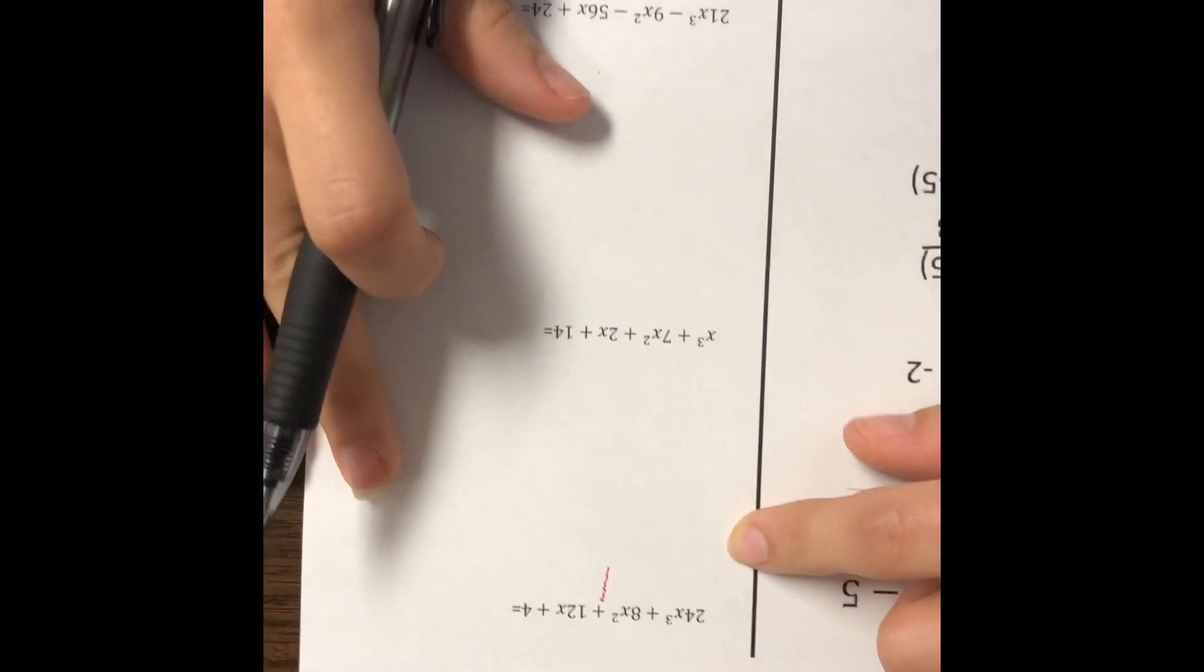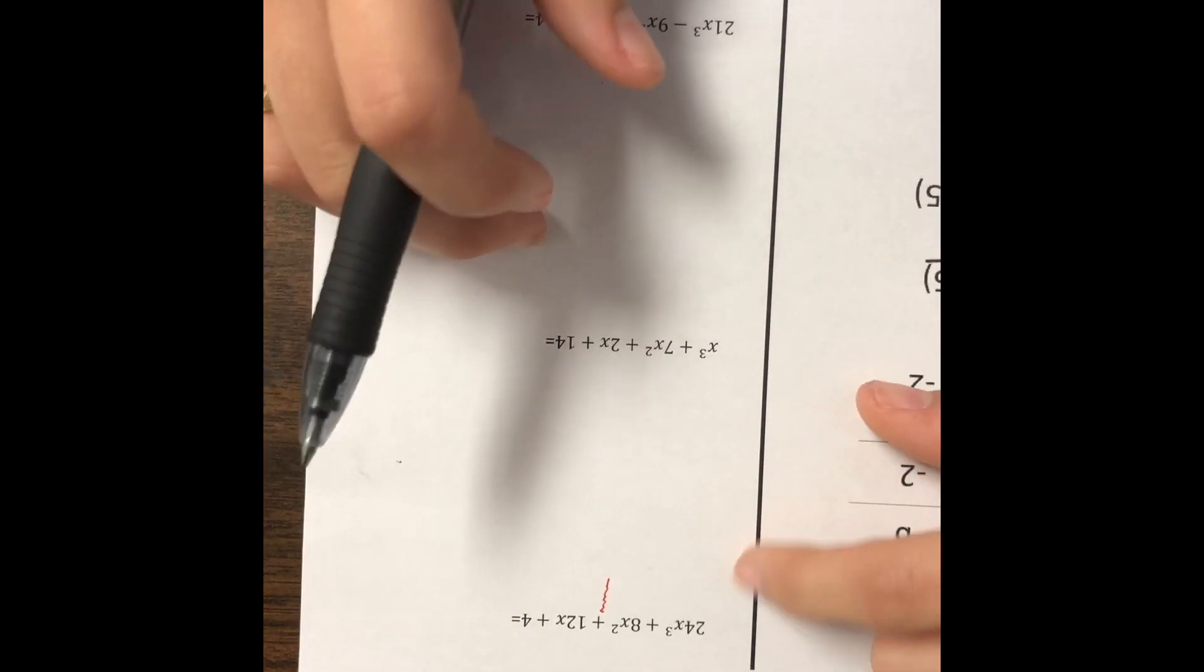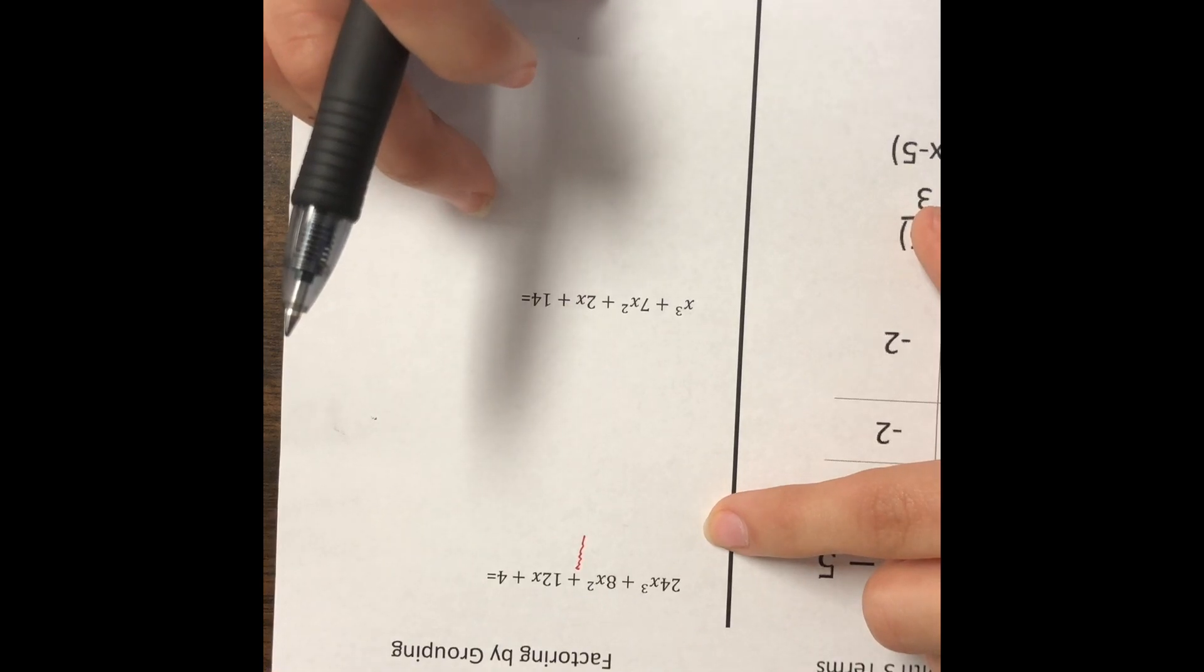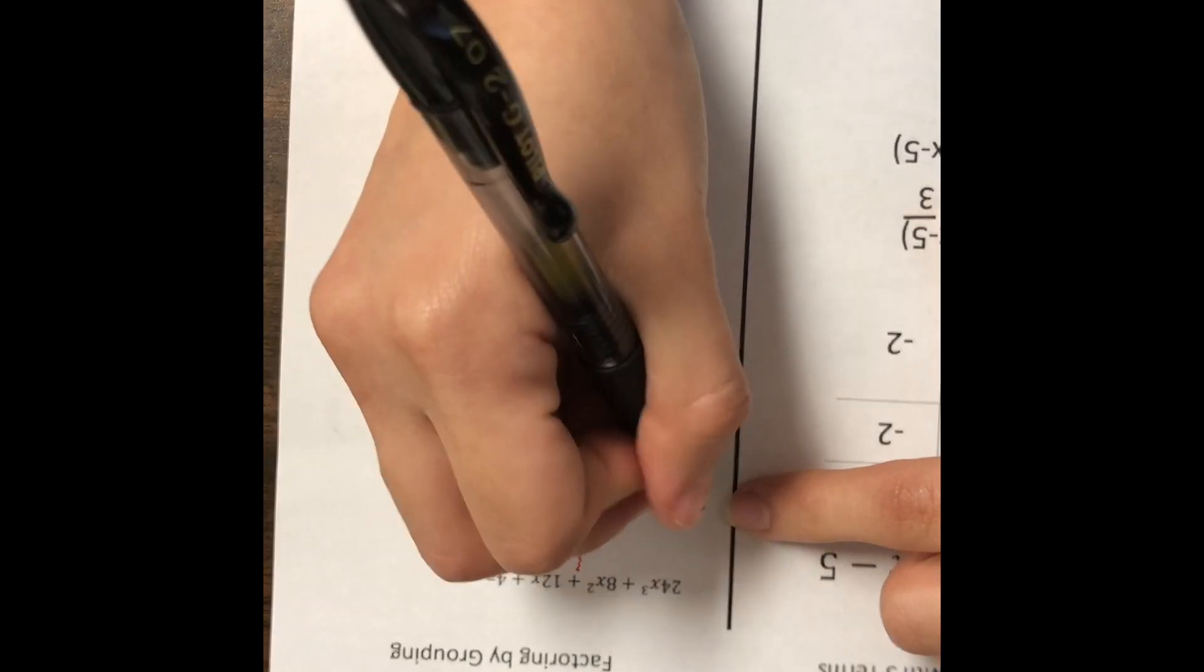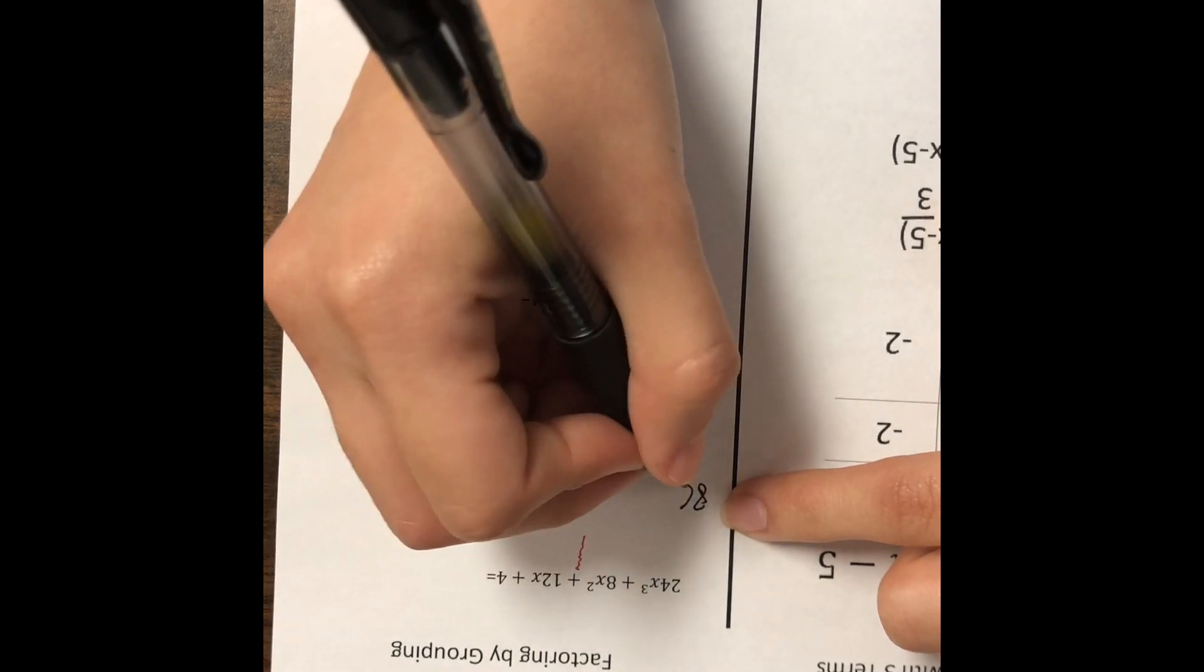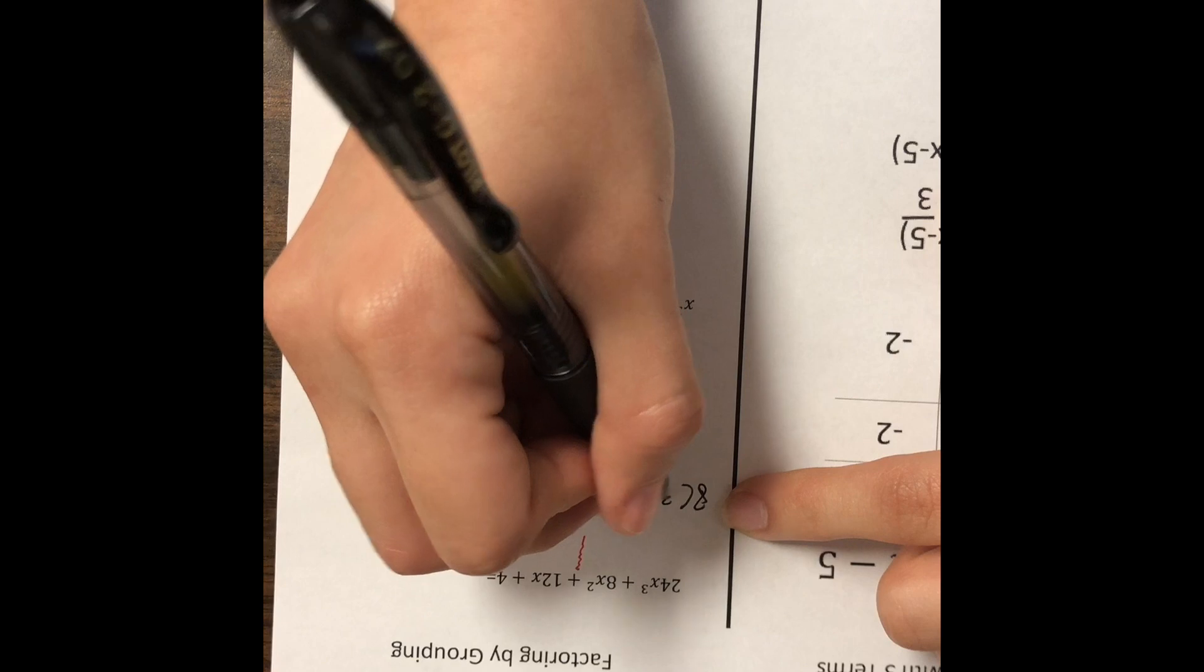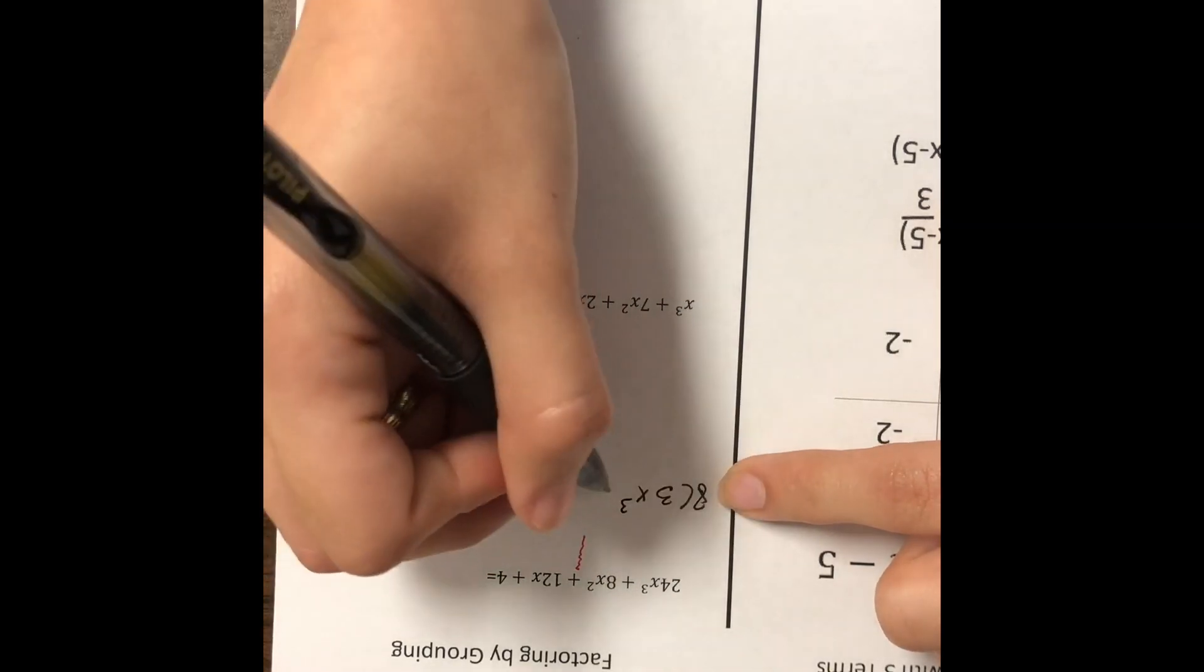Now, just like what we have been doing with factoring of two terms, where I factor out something in common, that's the same thing we're going to do up here. So what is something that we have in common up here? They're both divisible by 8, so I could pull out an 8. All right, so I write 24 divided by 8 is 3x cubed, and then 8 divided by 8 is 1.